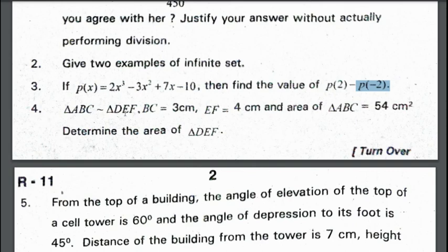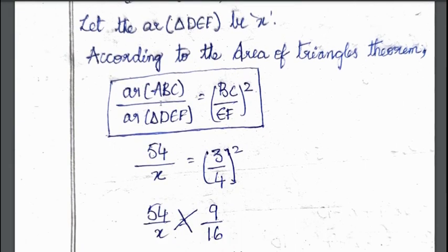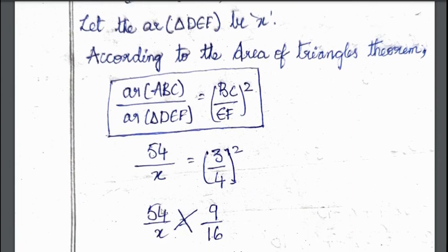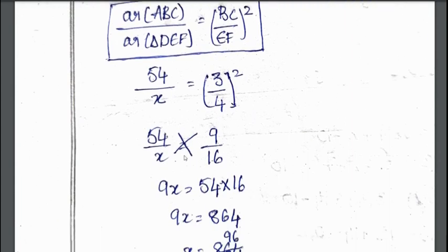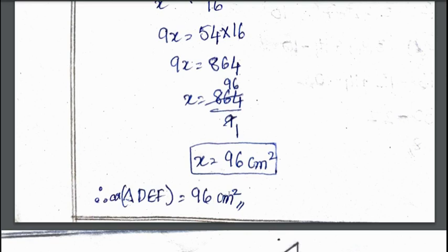Fourth question. Triangle ABC is similar to triangle DEF, BC is 3, EF is 4 and area of triangle ABC is 54 cm², determine the area of triangle DEF. We have a formula: area of triangle ABC by area of triangle DEF is equal to BC² by EF². ABC area is given as 54, DEF area we do not know, I assumed as X. Side BC is 3, EF is 4. 54 by X is equal to 3² is 9, 4² is 16. We will do cross multiplication, 9X = 54 × 16 which is 864. X is equal to 864 by 9 which is 96 cm². Therefore, area of triangle DEF is 96 cm².